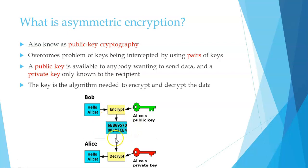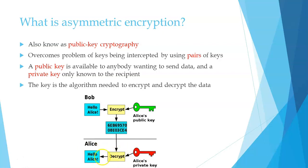Bob sends this encrypted message to Alice. The only key that can decrypt a message encrypted with Alice's public key is Alice's private key. These two keys are different, but only Alice's private key — which only she knows — can decrypt this message back to 'Hello Alice'. That's a rough idea of how asymmetric encryption works.